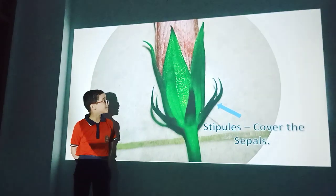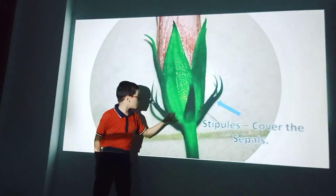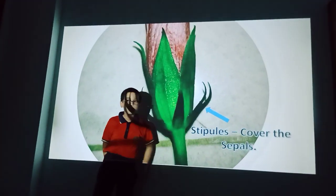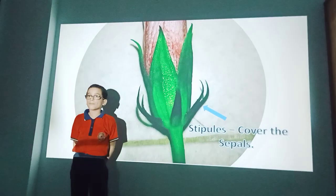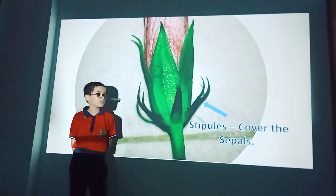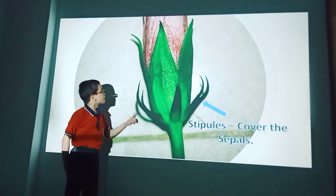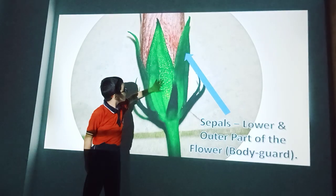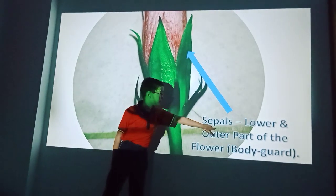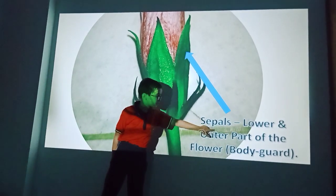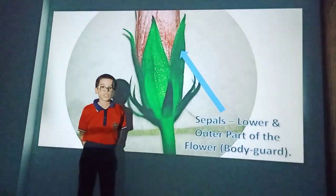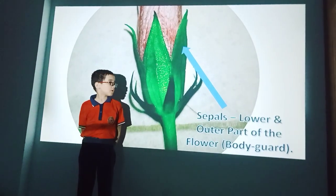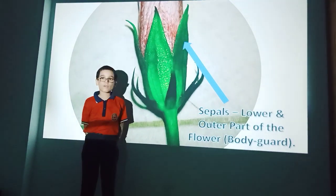Now friends, you can see this part is called Staples. Staples cover the saples. Next, you can see this part is called Saples. Saples is the lower part and outer part of the flower.